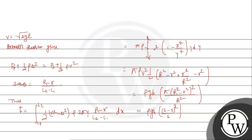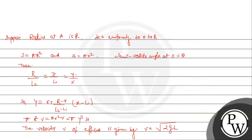Putting in the values — ρ = 1000 kg/m³, g = 9.8 m/s², h = 4.6 m, S = 3 cm² = 3×10⁻⁴ m², s = 1 cm² = 1×10⁻⁴ m² — the answer comes out to approximately 6.02 Newtons.